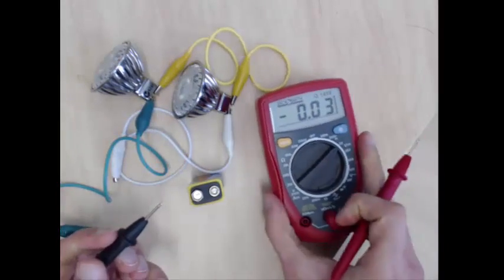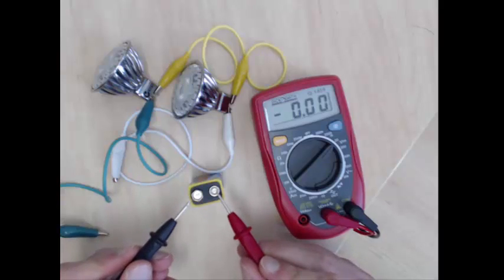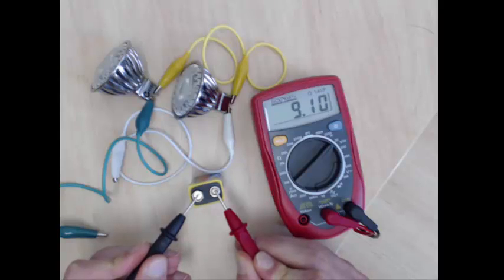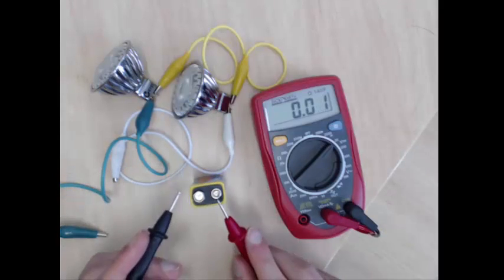If I put the voltmeter and use it to measure the two ends of the battery, we would see that we are getting 9.1 volts. Since this is a 9 volt battery, we'd expect the difference between the two terminals to be approximately 9 volts.